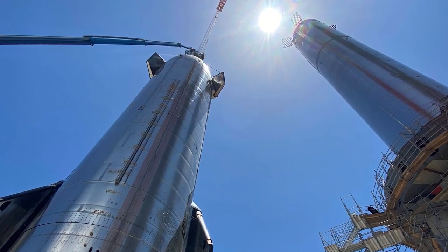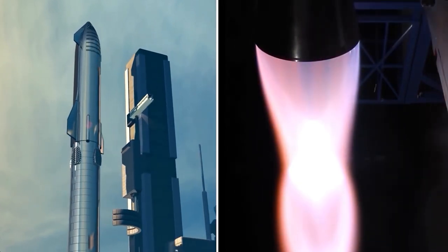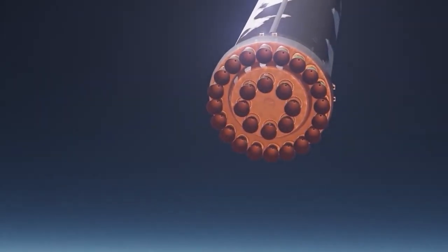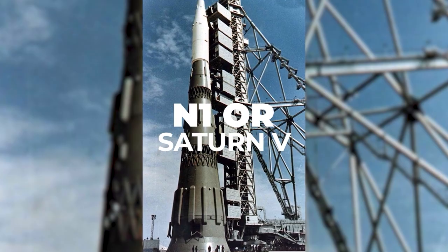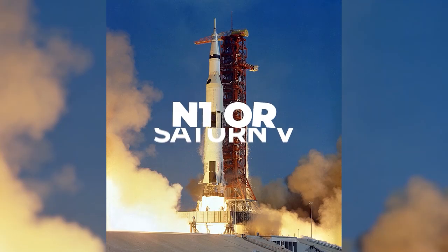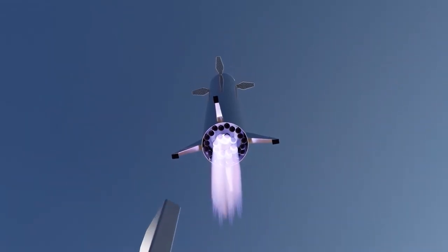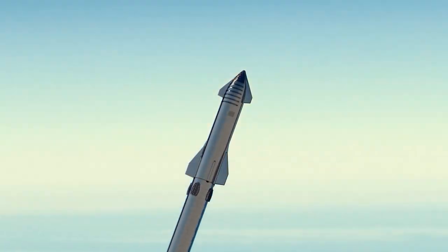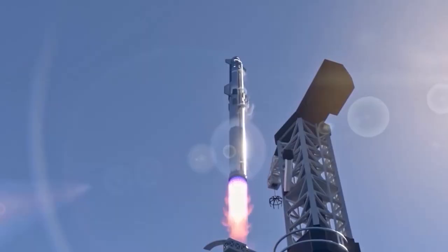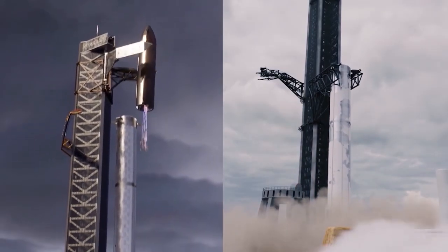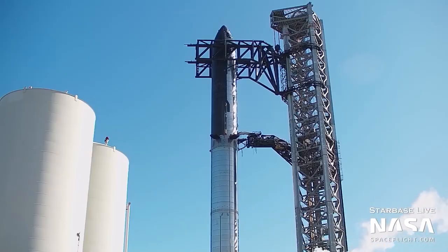The fully-assembled Ship 20 and Booster 4 stack would have likely weighed around 4,000 to 5,000 tons and been able to produce around 5,000 tons of thrust at liftoff, substantially heavier and more powerful than N-1 or Saturn V, the enormous rockets ever successfully and unsuccessfully launched.